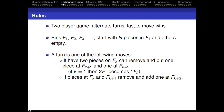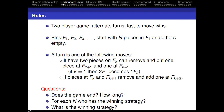A turn is one of the following two options: you can either take two pieces on Fₖ and split it, or you can take a piece on Fₖ and a piece on Fₖ₊₁ and combine to Fₖ₊₂. In the second move, you actually decrease the number of tokens on the board by one. In the first, you keep the number of tokens constant. Does the game end? If so, how long does it take? For each n, who has the winning strategy? And what is the winning strategy?